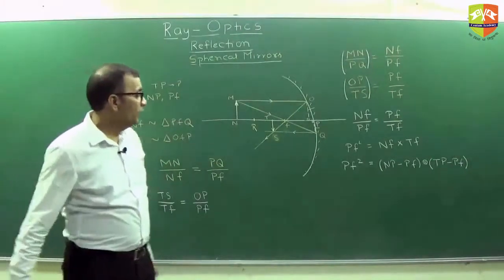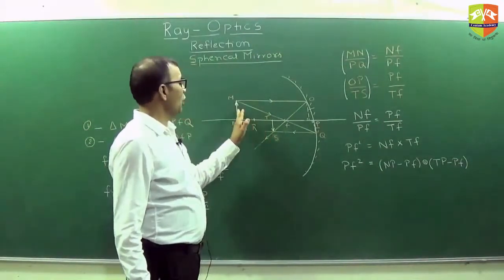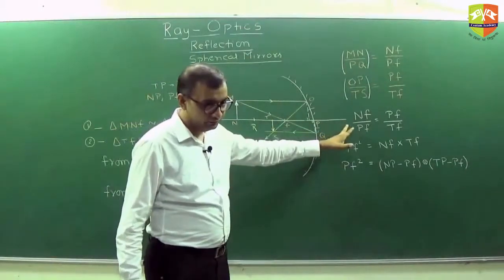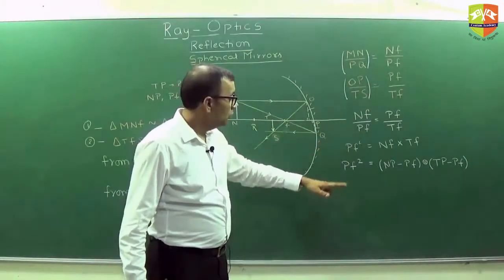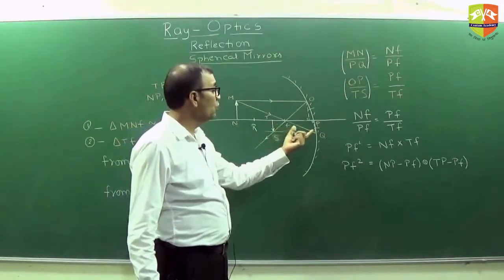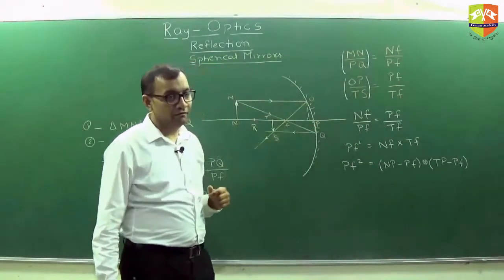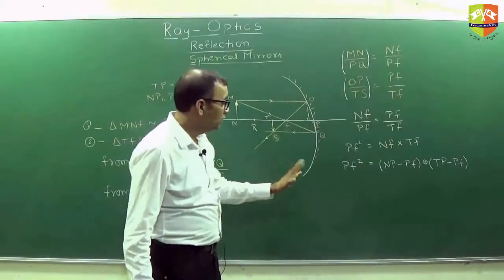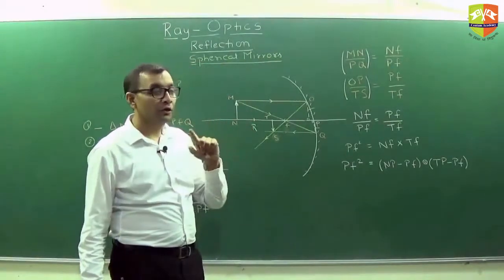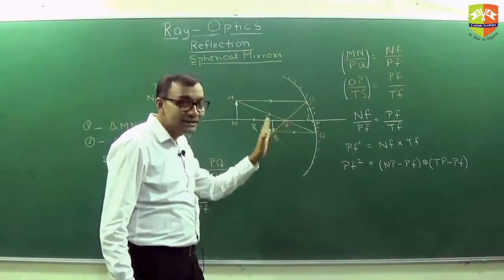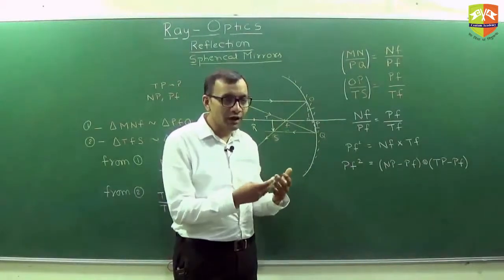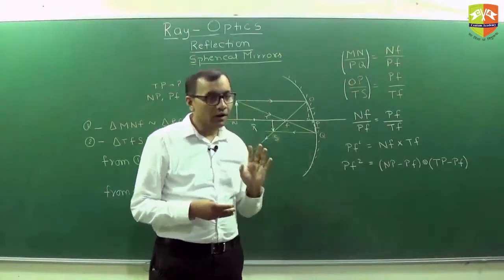Look at it. At times, if the object is between F and P, the image will go to the other side. So T will go there. If T goes there, TF will then become equal to FP plus TP — are you getting it? So this formula will not be valid then. But if I introduce some sort of sign convention — this side has one sign and that side another — then automatically sign switching will happen, and this minus will become plus.